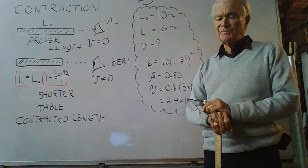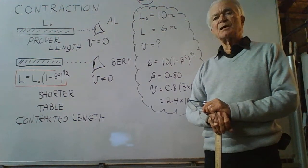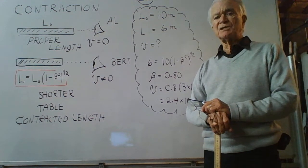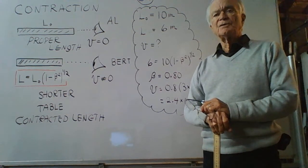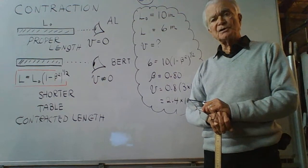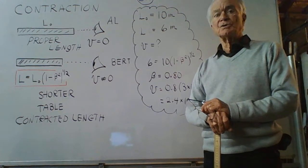So, the catcher measures a path length from home plate to first base that is shorter than the distance the runner says he or she runs.